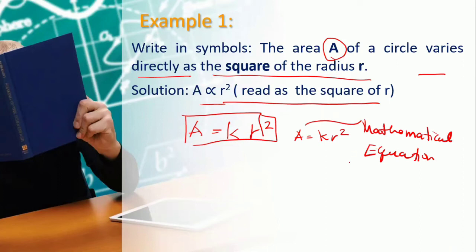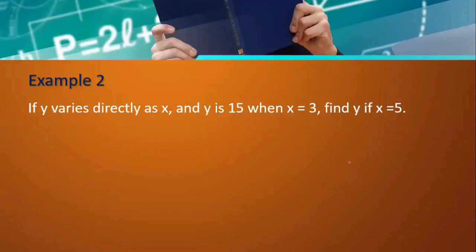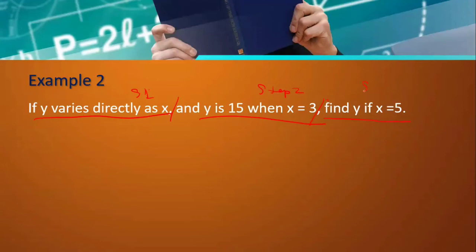Let's continue to step number two and step number three. There are three parts to our solution on direct variation. We have: if y varies directly as x, and y is 15 when x is 3 — these are steps one and two — then find y when x is 5 — that is step three.